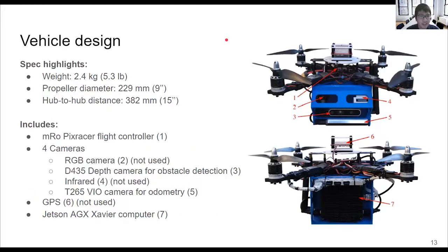To validate the effectiveness of our path planner, we built this quadcopter and did outdoor experiments in a forest environment. The vehicle weighs 2.4 kilograms, and the propeller's diameter is 229 millimeters. The hub-to-hub distance between two diagonal motors is 382 millimeters. The vehicle is equipped with an mRo Pixracer flight controller running the standard PX4 firmware for low-level control. The vehicle is also equipped with four cameras. A T265 VIO camera for odometry. The camera is mounted 37 degrees with respect to the horizontal ground to track features on the ground and avoid view occlusion from other parts of the vehicle.